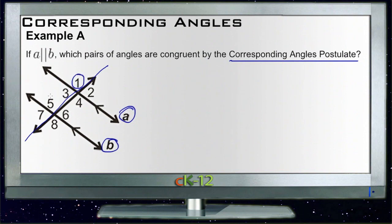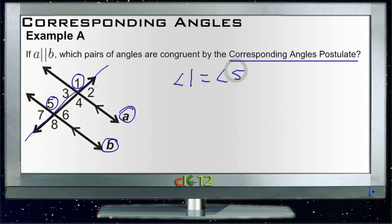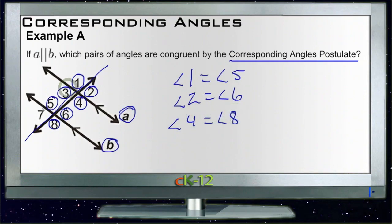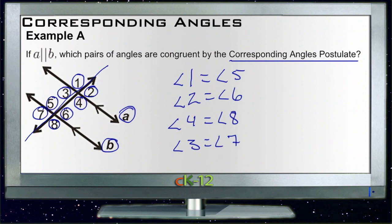So in this case we have our top angle, which is one, and our other top angle, which is five — so angle one is equal to angle five. The right-hand angles two and six are also going to be equal: angle two is equal to angle six. The bottom angles are four and eight, so angle four equals angle eight. And finally the left-hand angles: angle three equals angle seven.